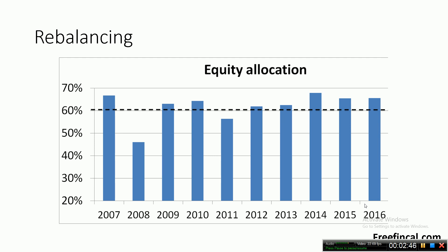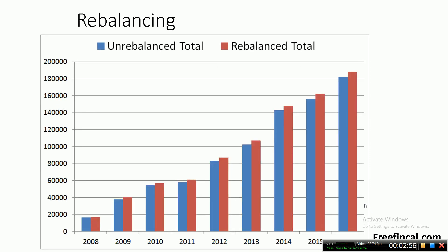Rebalancing essentially means at the end of each year, I reset my equity allocation back to 60% — whether it is above 60% or below 60%, I reset it back to 60%. In this particular sequence of returns, the rebalanced value of the portfolio at the end of each year is a little bit higher, and the rebalanced portfolio at the end of those 12 years or so is higher than the unrebalanced total, but it need not always be the case.